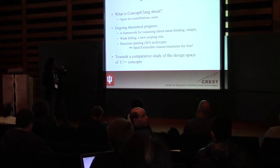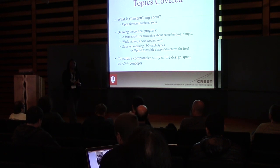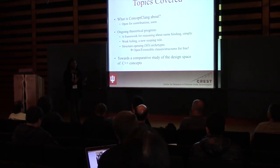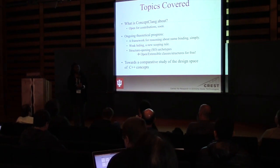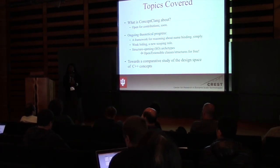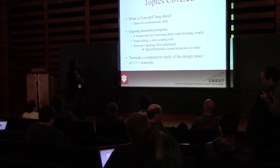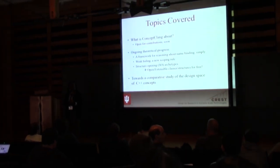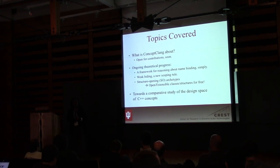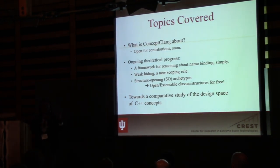The second point is to highlight the kind of theoretical progress that we're able to make just by thinking about full concepts. It's important to note that these advances actually go beyond C++ and concepts itself and address issues with programming languages in general. I talked about the first two — the name binding framework and the weak hiding scoping rule — last year. This one I haven't talked about yet and we're going to go over that today, along with some comparative study based on current findings and previous work.